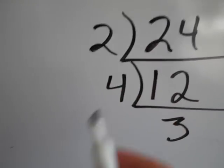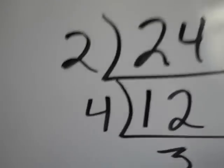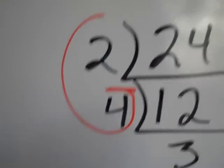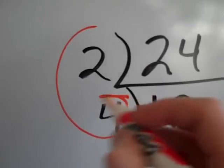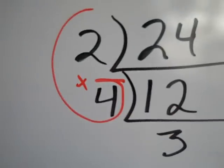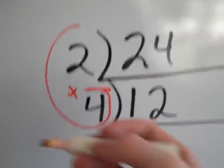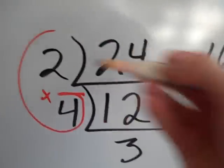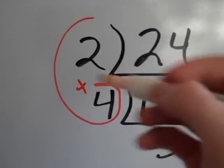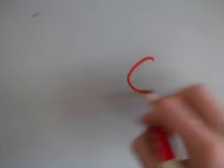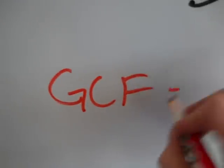These numbers on the outside are the common factors. What you can do is, I make a big G around these common factors. And then to get the greatest, that's what the G stands for, I just need to multiply them all together. Sometimes there's 2, sometimes there's 3, sometimes there's more. But however many common factors that you actually got out, you're going to multiply those together. So 2 times 4 is 8. So the GCF is 8.